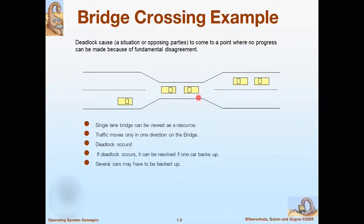Is there a deadlock? We can say yes — if both traffic flows do not want to turn back, then this situation is called deadlock. Here both of them want to cross the bridge but none of them actually want to sacrifice. This situation can be resolved if one vehicle backs up, though several cars or vehicles may need to back up.